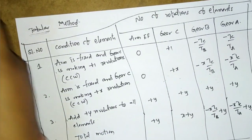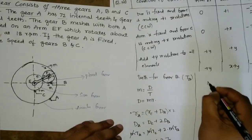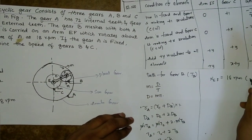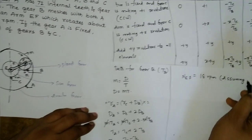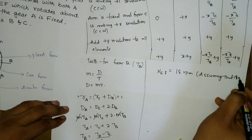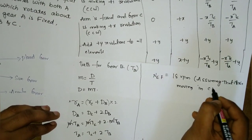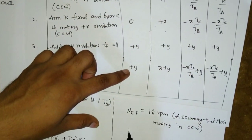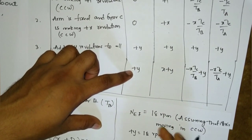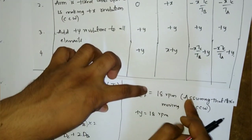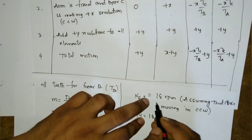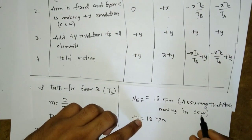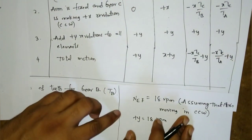Now apply the conditions. The arm EF speed NEF = 18 RPM. Assuming counterclockwise (positive), the total motion of the arm is +Y = 18 RPM. Therefore Y = 18.